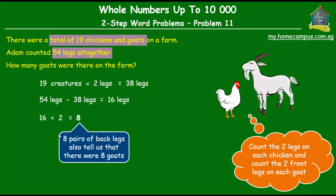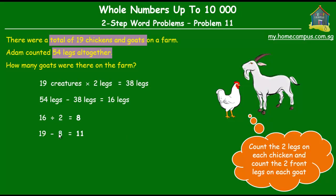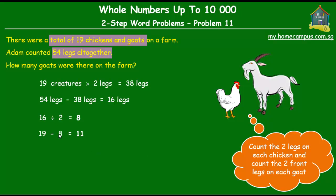So if there were 8 goats on the farm, how many chickens were there? Well, there were 19 creatures in all and 8 of them were goats, so 19 minus 8, which is 11, were chickens. Now let's go ahead and check if what we calculated is indeed correct.